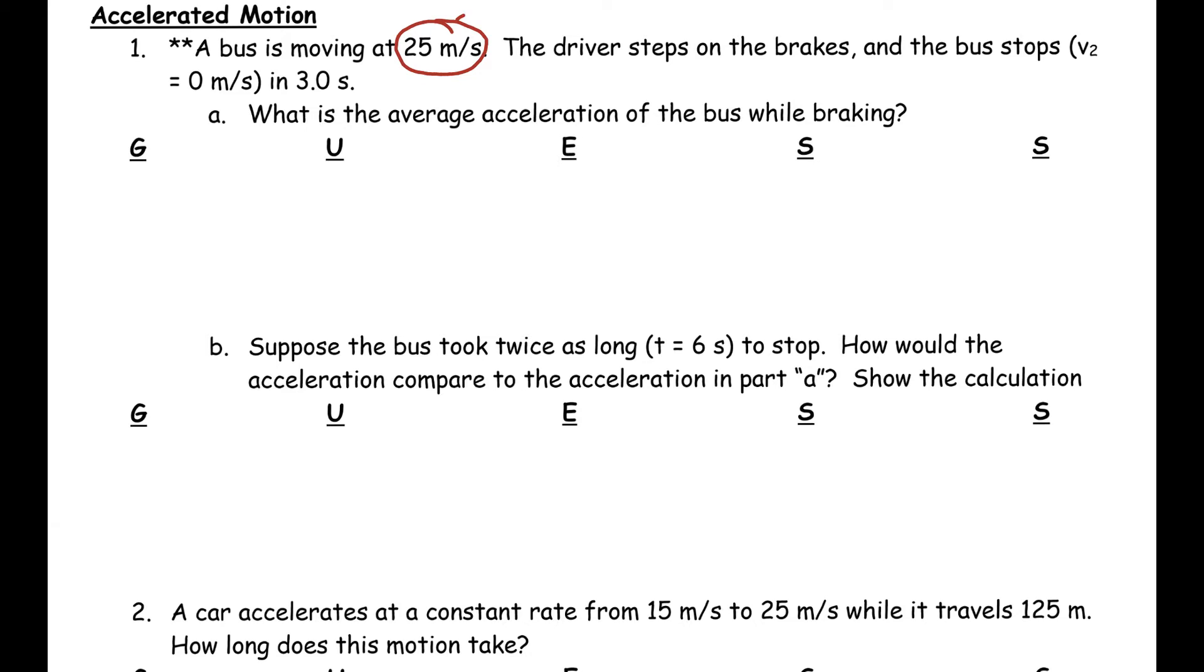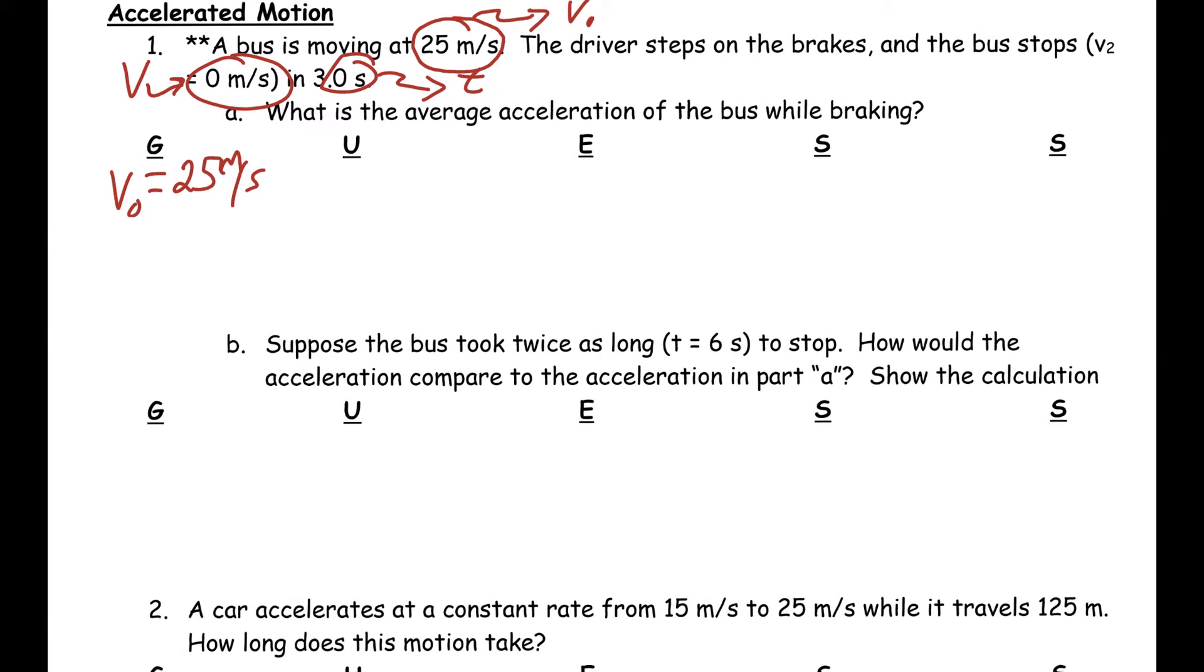This is our initial velocity, or V₀. This is our second velocity, or our V. And then this is a time. And we'll just write those down. So, V₀ is equal to 25 meters per second. V equals 0 meters per second. And then T is going to be 3 seconds.